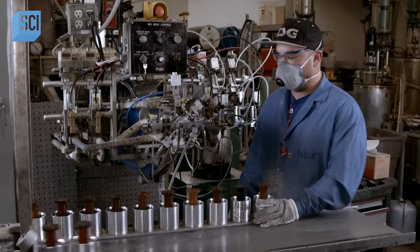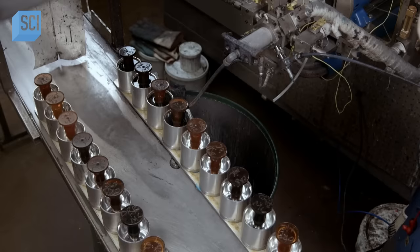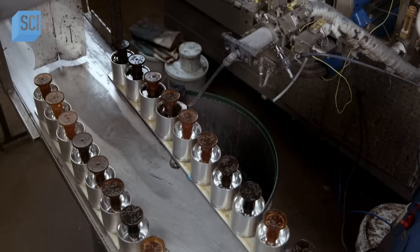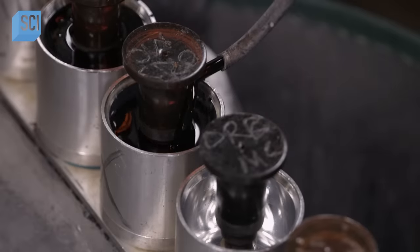A nozzle dispenses freshly mixed polyurethane liquid into the wheel molds. The liquid starts to solidify immediately.